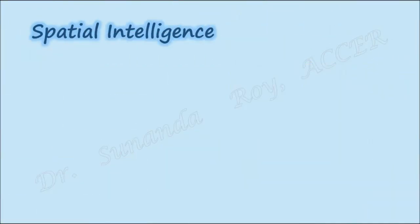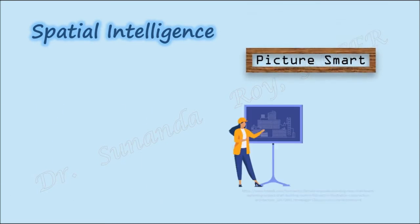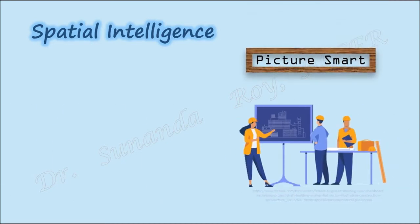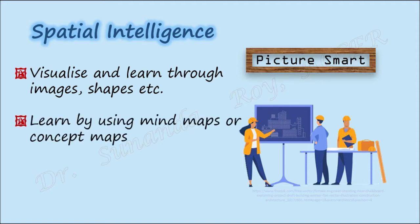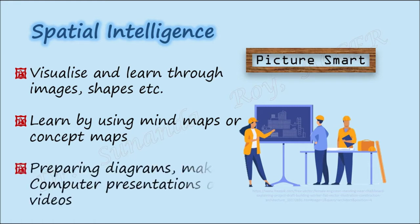The first one is spatial intelligence. These individuals think or learn in terms of pictures and are also known as picture smart. Professionals like architects, mechanics, sculptors, and pilots show high spatial intelligence. Spatial intelligence enables visualizing and learning through images, shapes, patterns, designs and textures. Students with dominant spatial intelligence learn better using mind maps and concept maps. Teachers can encourage the development of spatial intelligence by giving students activities that involve preparing diagrams, making computer presentations or videos.